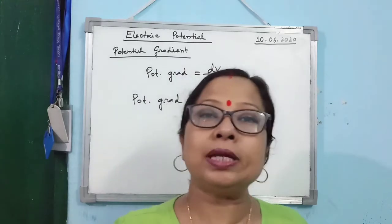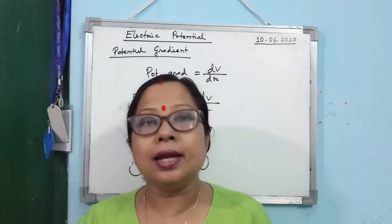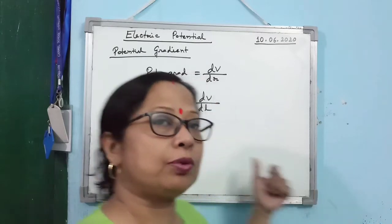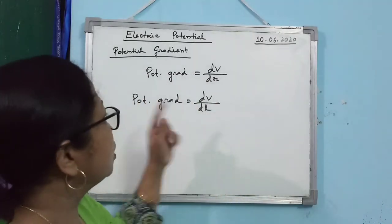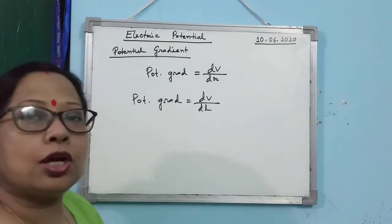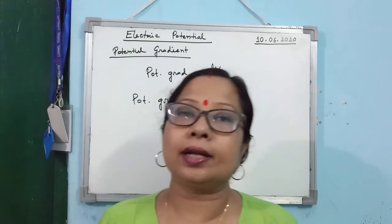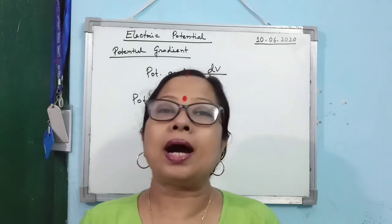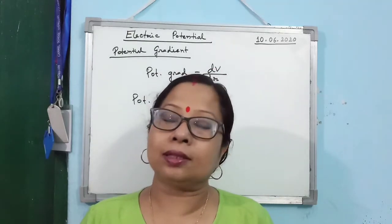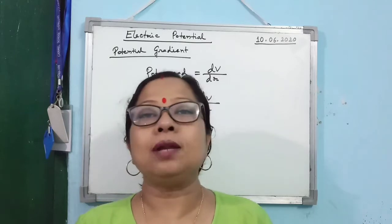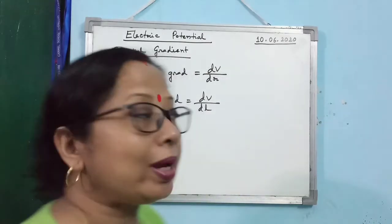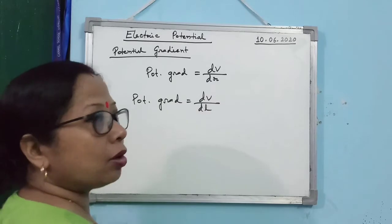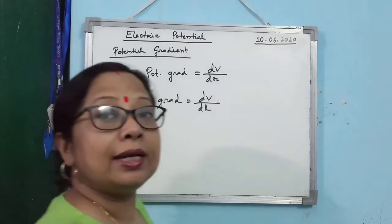When I discuss potentiometers in the next chapter on current electricity, we will come back to this point. So the simple meaning of potential gradient is change in potential per unit length or change in potential per unit distance, when R depends on more than one dimension.